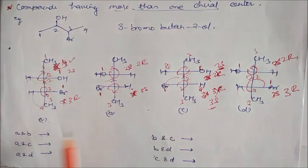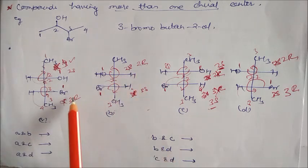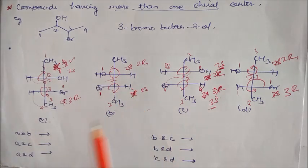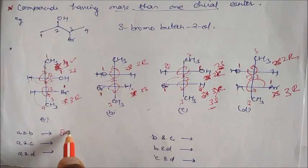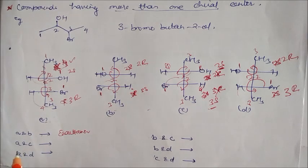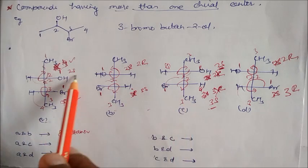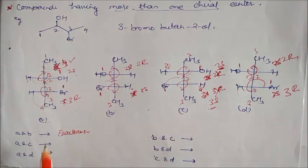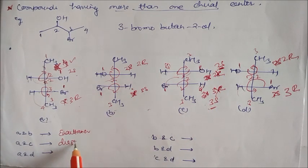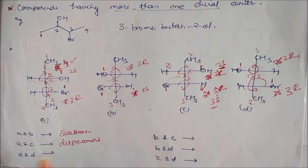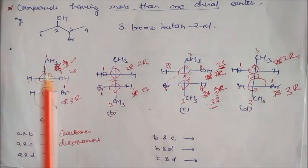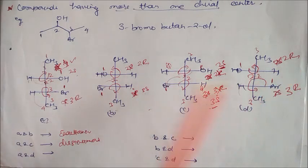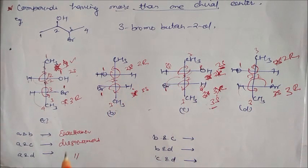Now if you compare A, B, C, and D — so what is A and B? A is 2S, 3R, and B is 2R, 3S. So A and B is your enantiomer. Similarly, A and C: A is 2S, 3R and C is 2S, 3S — so A and C will be your diastereomer. Now compare A and D: A is 2S, 3R and D is 2R, 3R — so this is same diastereomer.